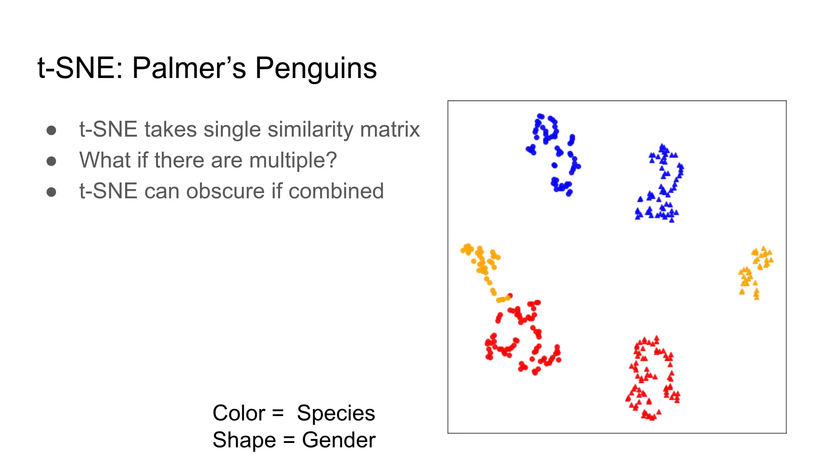The shown example is the Palmer's Penguin dataset, which includes around 350 penguins with several physical characteristics along with each penguin's gender. The color of a point corresponds to the species of penguin, while the shape corresponds to gender. We see that t-SNE has accurately captured each species-gender pair, but if we did not know the ground truth classification, we would be left to assume that each of the clusters are unrelated.